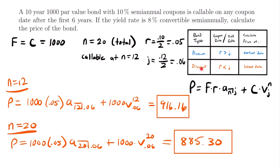In conclusion, this table is all you need to know about callable bonds. Compare your coupon rate and yield rate to determine whether the bond is purchased at a premium or discount, then use the appropriate date to minimize the price. As a side note, if the coupon rate equals the yield rate, the bond is purchased at par value, and the price will be the same regardless of which date you use.